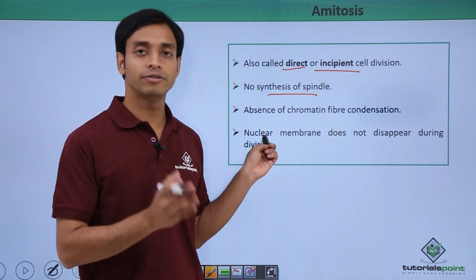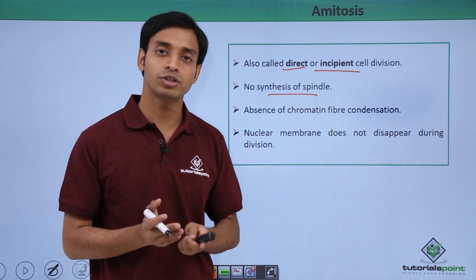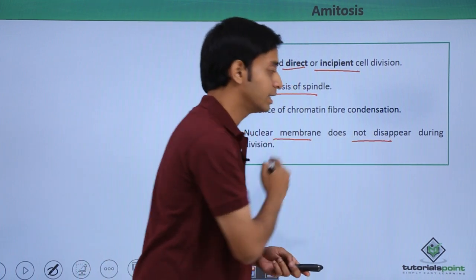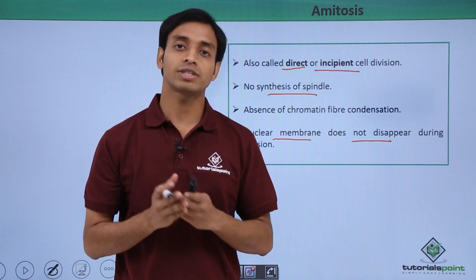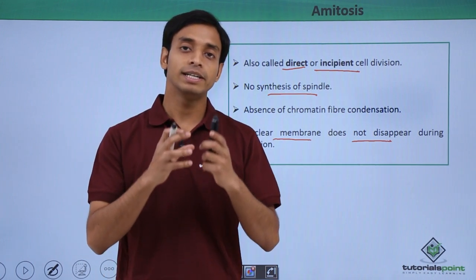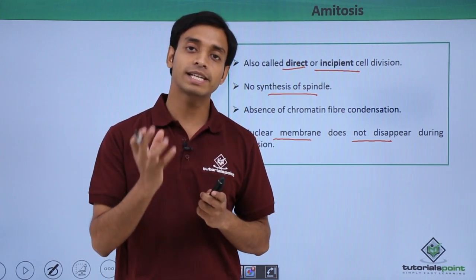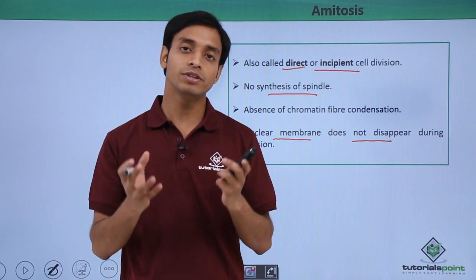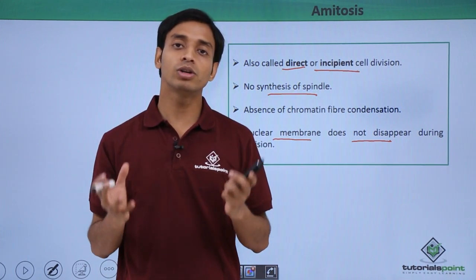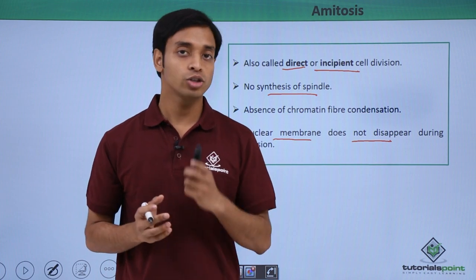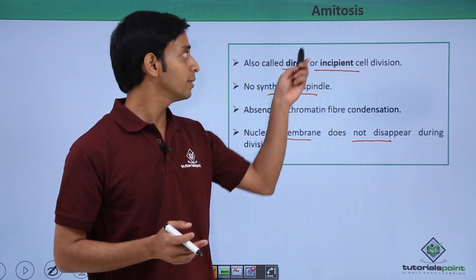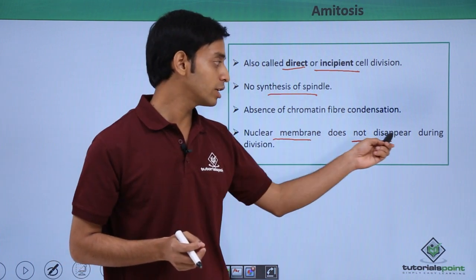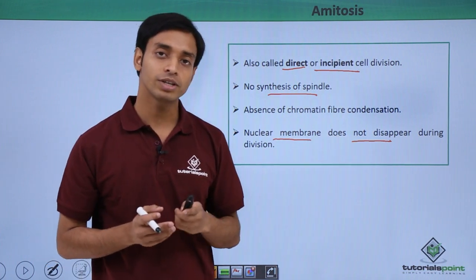A very important difference between other types of cell division and amitosis is that the nuclear membrane does not disappear. In other cases of cell division, the nuclear membrane dissolves and disappears, and then reappears after cell division is completed. This process is not followed in amitosis — the nuclear membrane does not disappear during cell division.